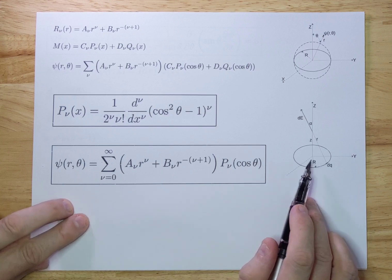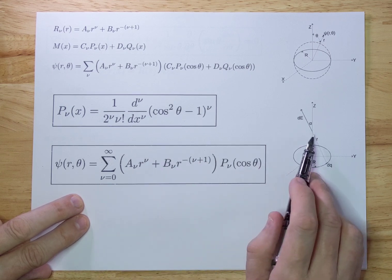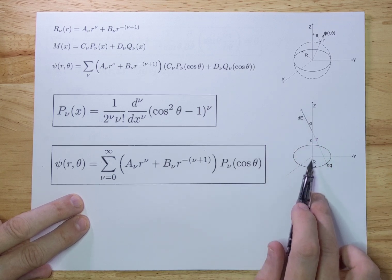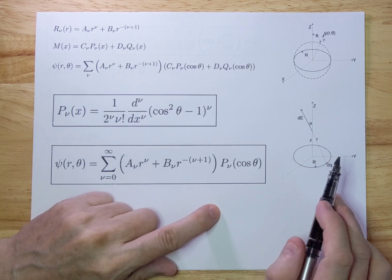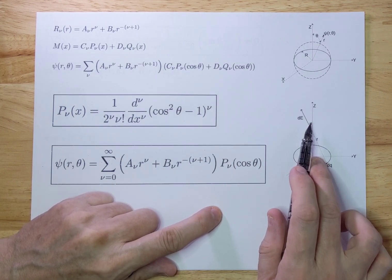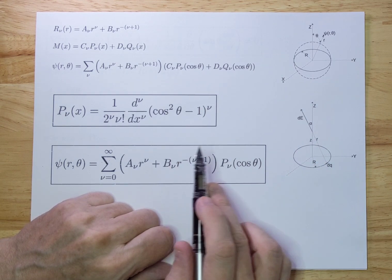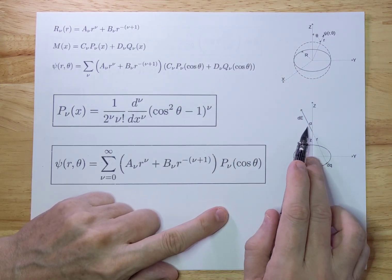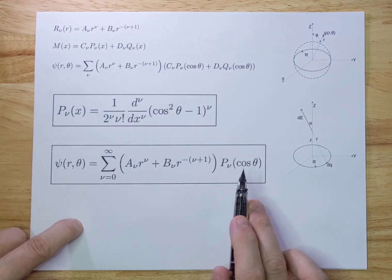We are going to do that using first principles — we're going to calculate the value of the potential and the electric field on the z-axis, because there's a lot of symmetry there. Then we're going to rewrite our solution into this form and extend it to use for all theta values. So now it only works for theta equals zero, but then we're going to extend it so it can be applied to all theta values.